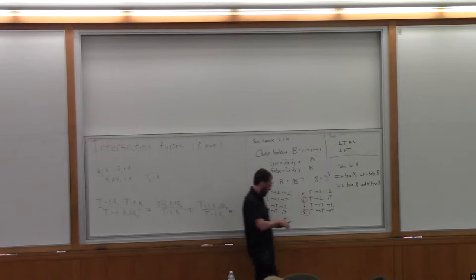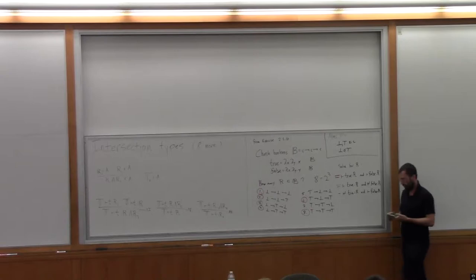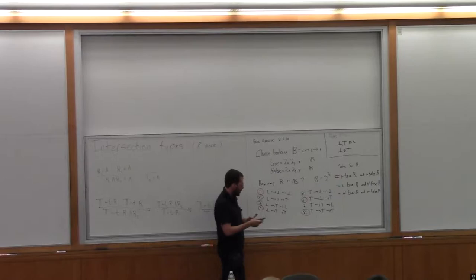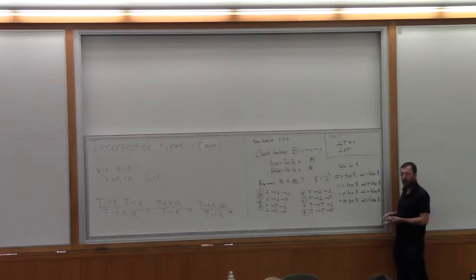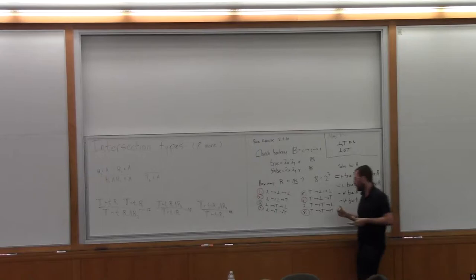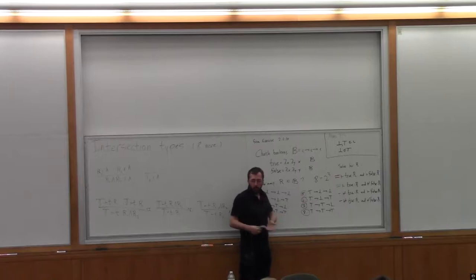The symmetric case: what R such that true does not have type R but false does? That is top → bottom → bottom. And there's one type left — a refinement which neither true nor false has — that's top → top → bottom. We can't give that type to true or false, so there's no closed term that inhabits this type in the language.